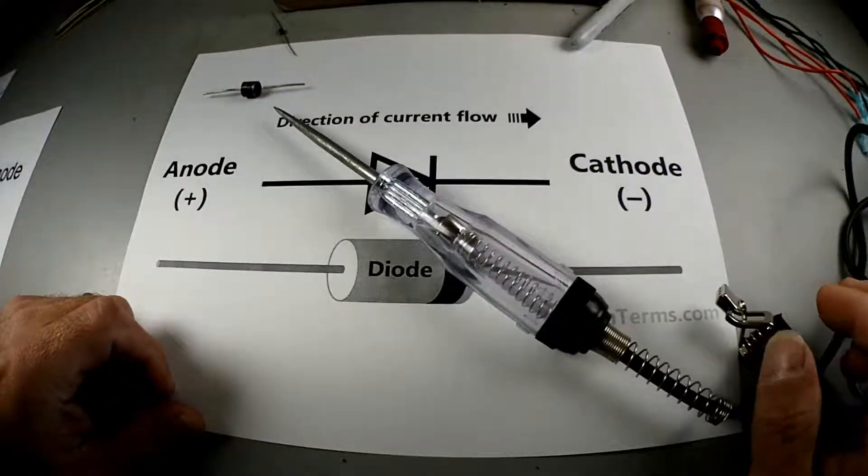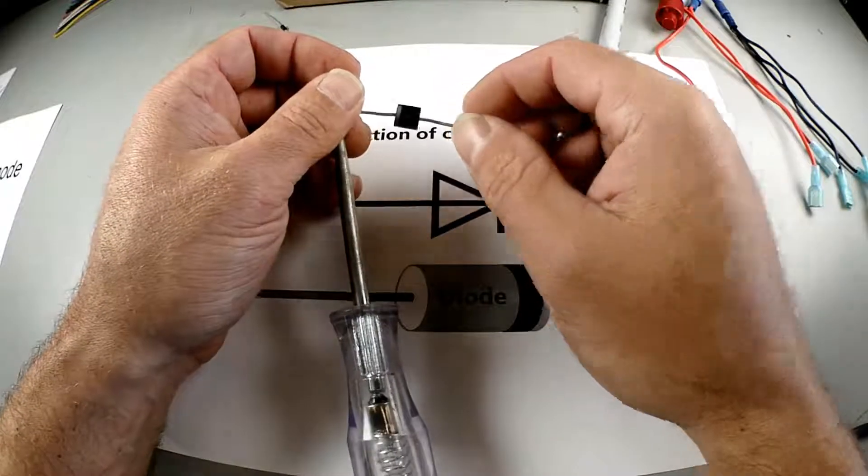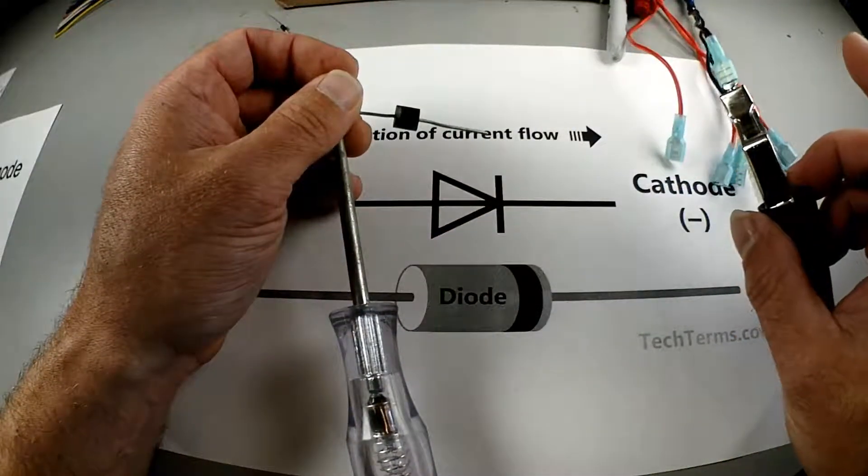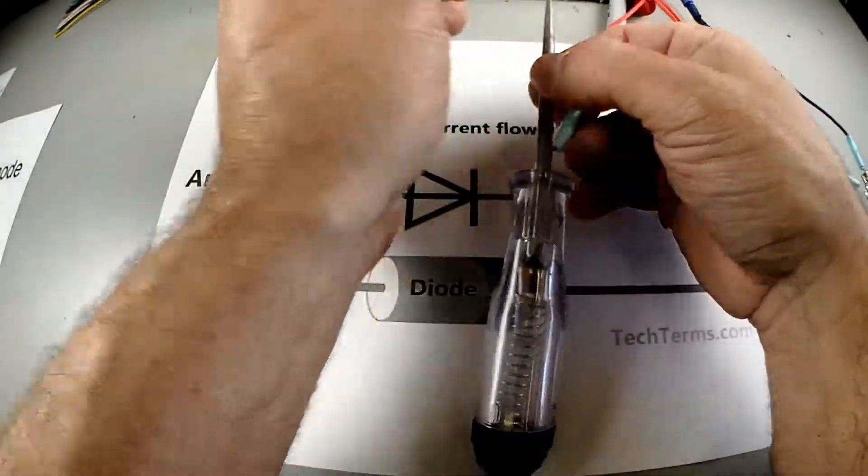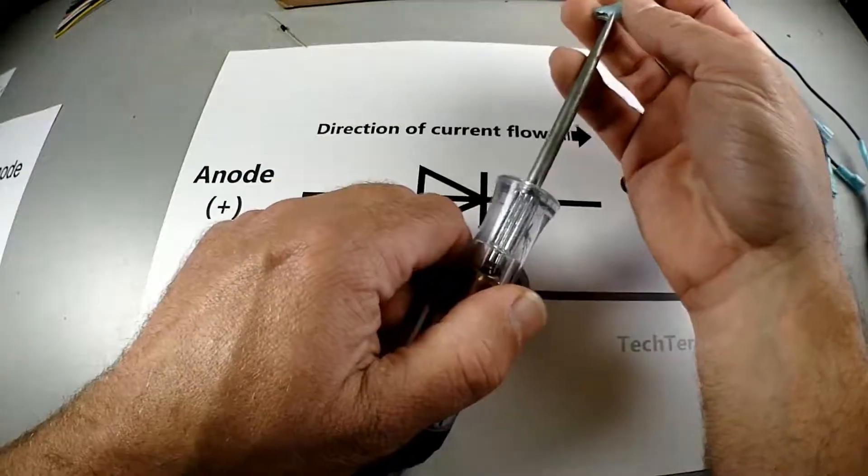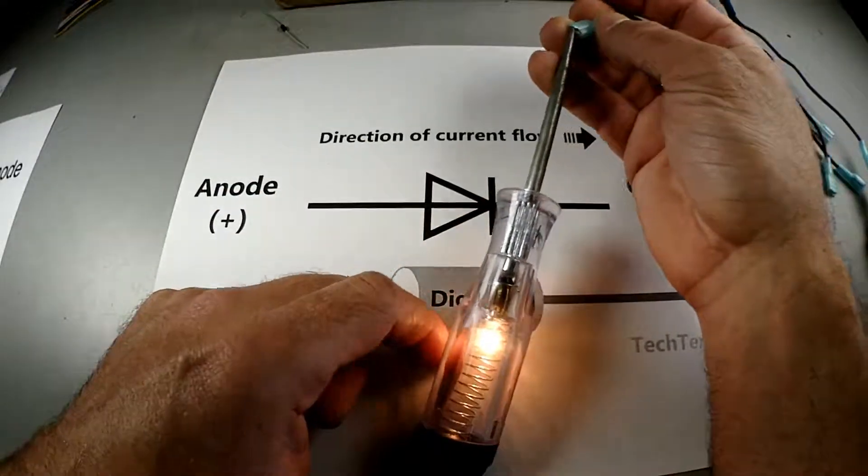Once again I'm going to break out a test light. So right here I have grounded my test light on one side. I have 12 volts right here. Obviously if I touch it to the end of the test light it's going to turn on.